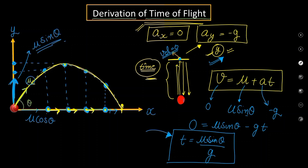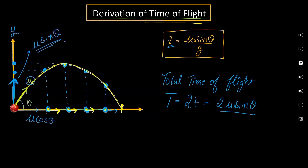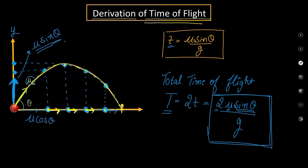The only problem is there is no factor of 2 yet. The time t we found is only the time from position 1 to position 2 — just half the flight. The body takes t time to go from position 1 to position 2, and again t time to come back from position 2 to position 1. So the total time of flight T = 2t = 2u sin theta / g. This is the formula we were supposed to derive.